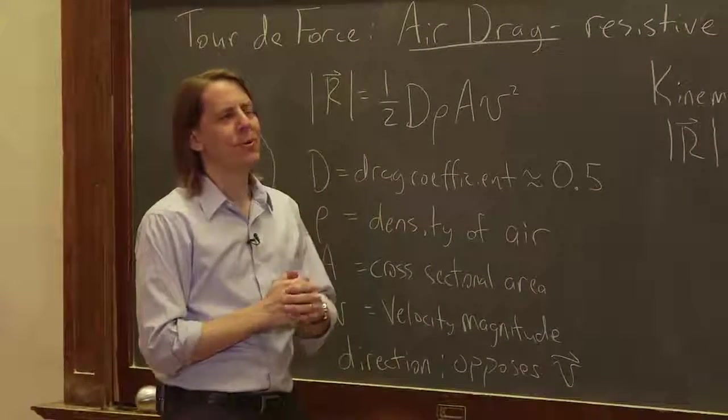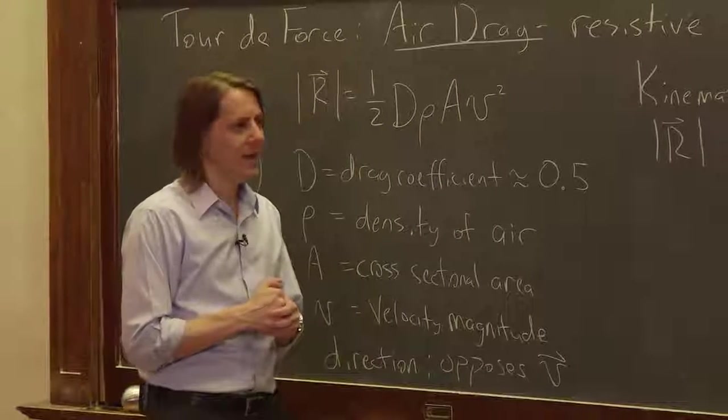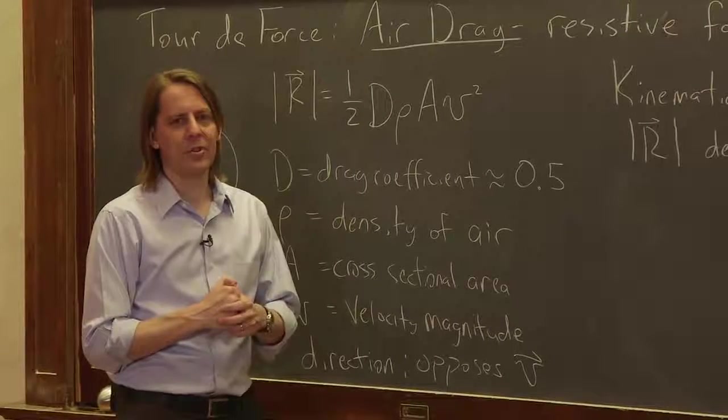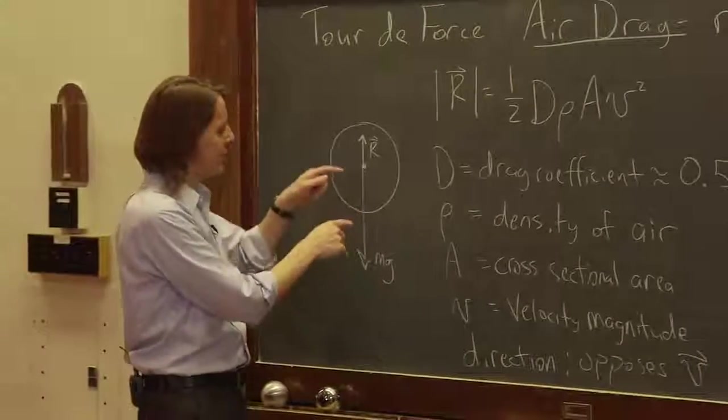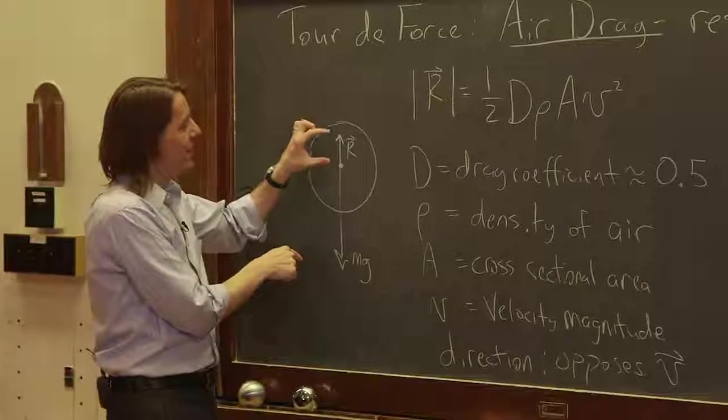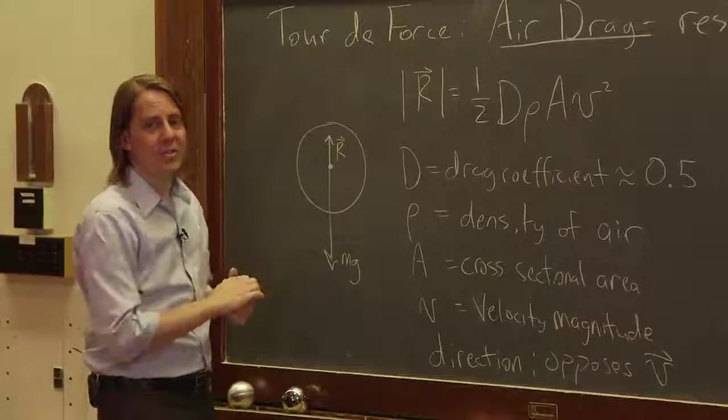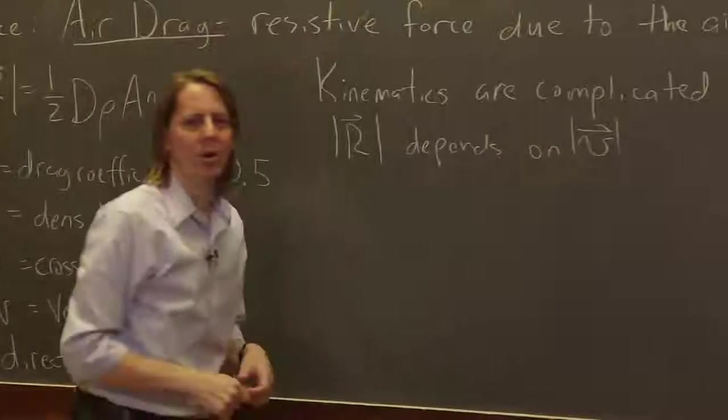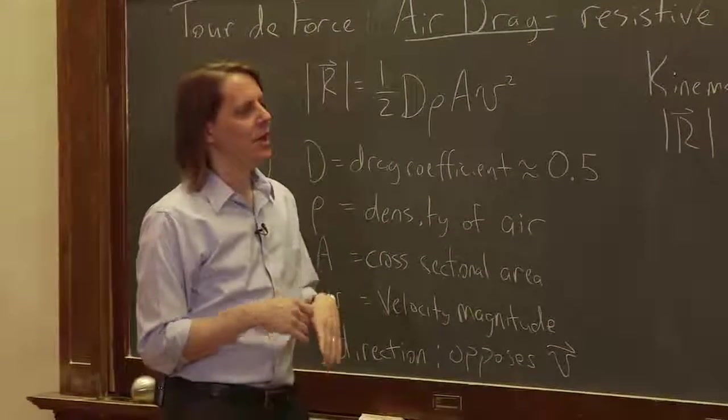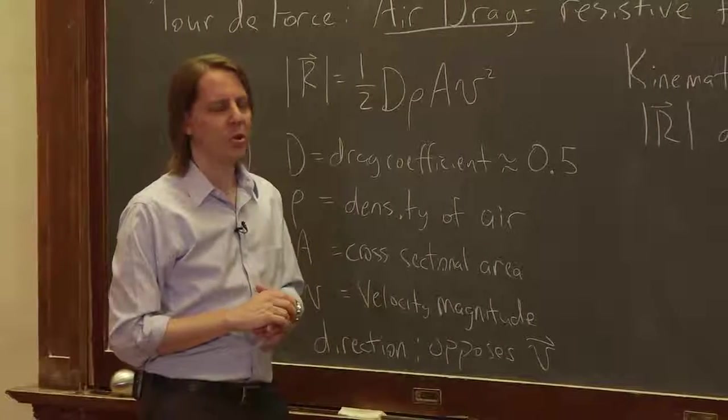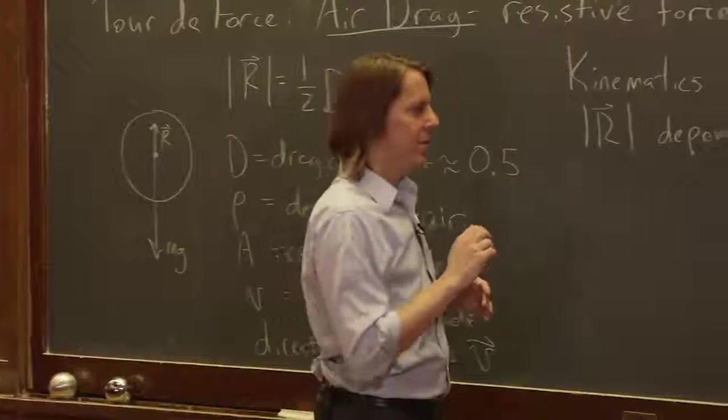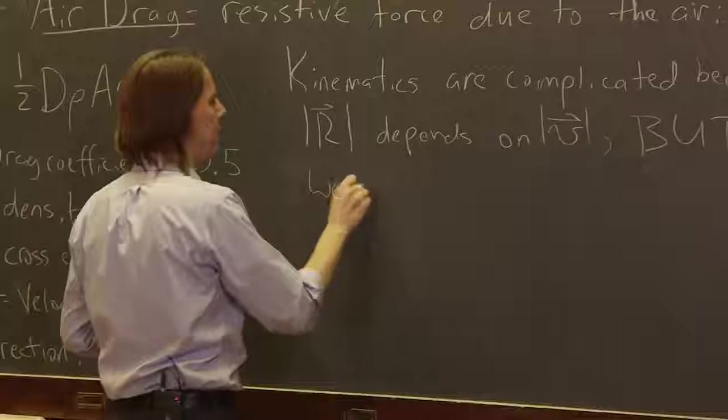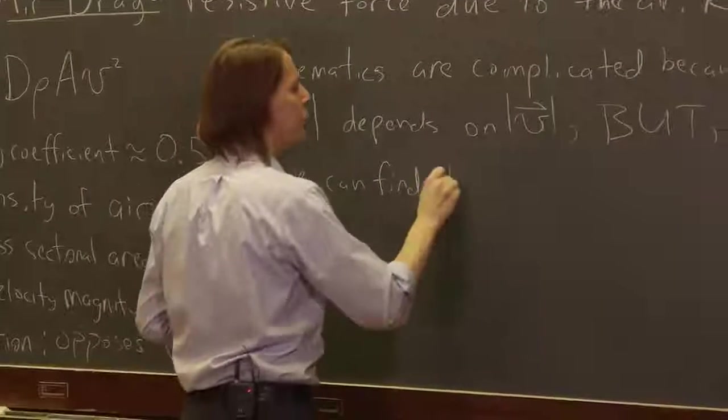All the kinematics we did were for constant acceleration. Those equations apply for constant acceleration, but we have a varying acceleration that's varying with v squared, so it leads to a complicated differential equation well beyond this course. We can't really solve the kinetics, the detailed motion, but we can find the terminal velocity.